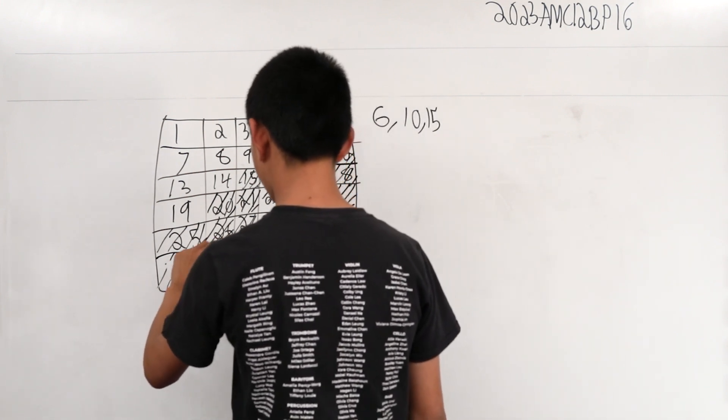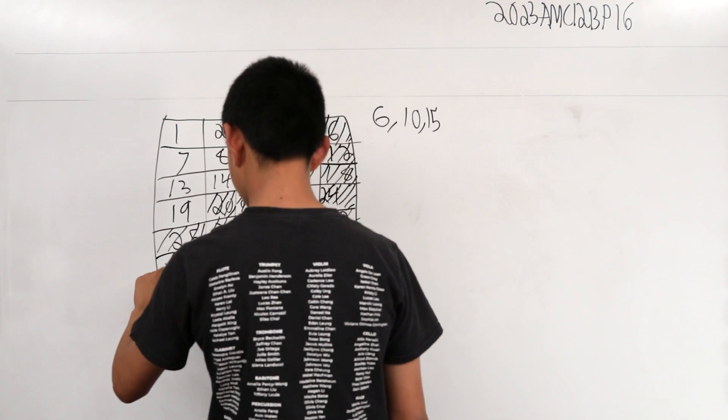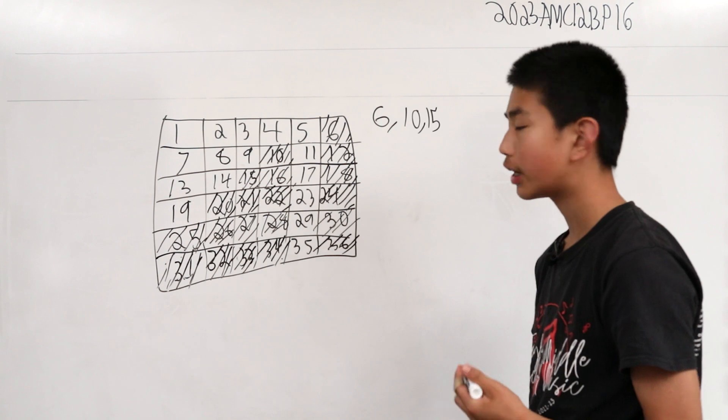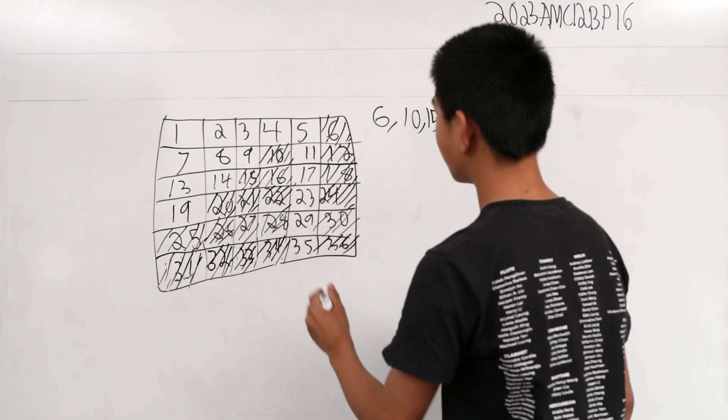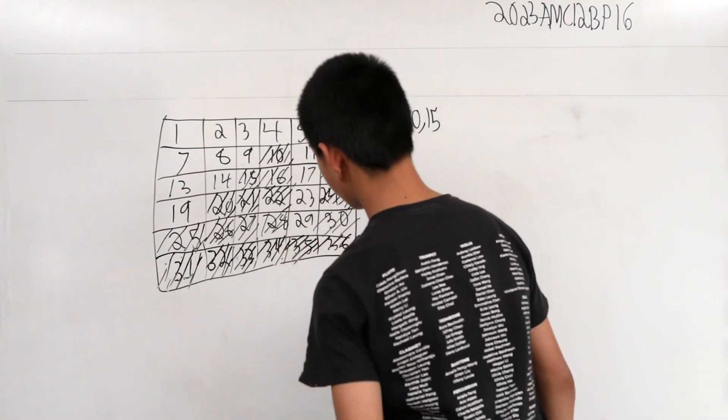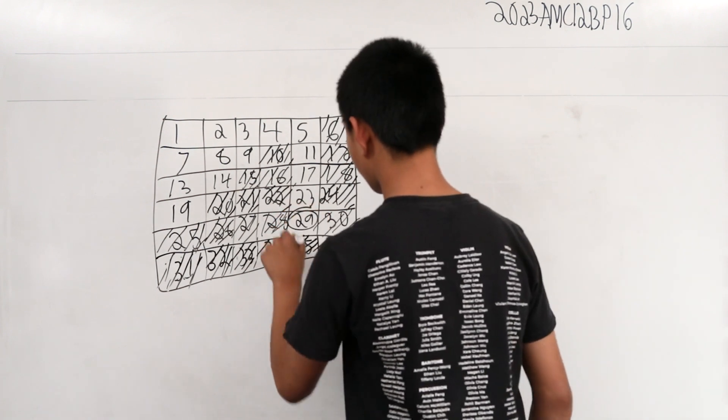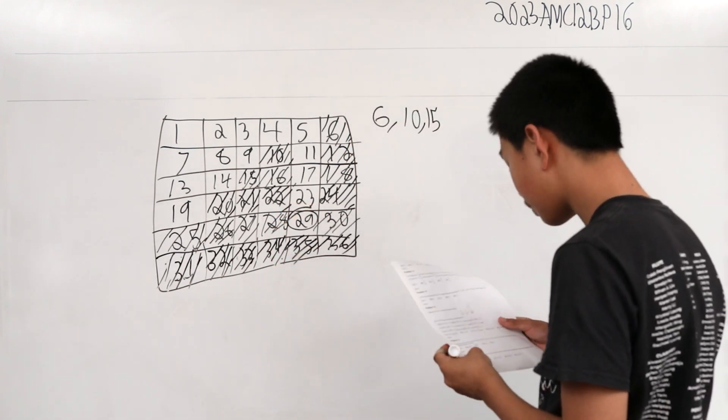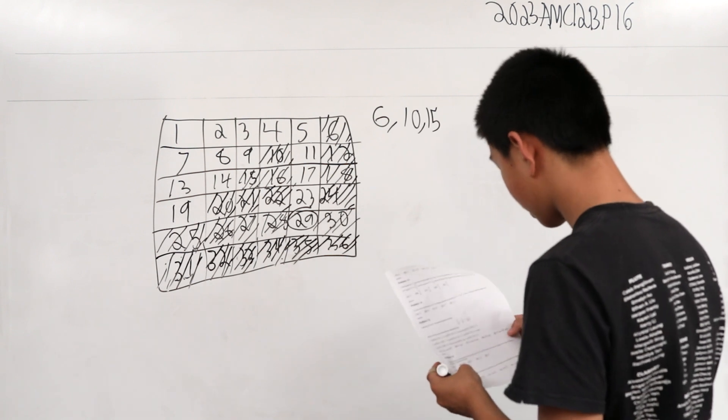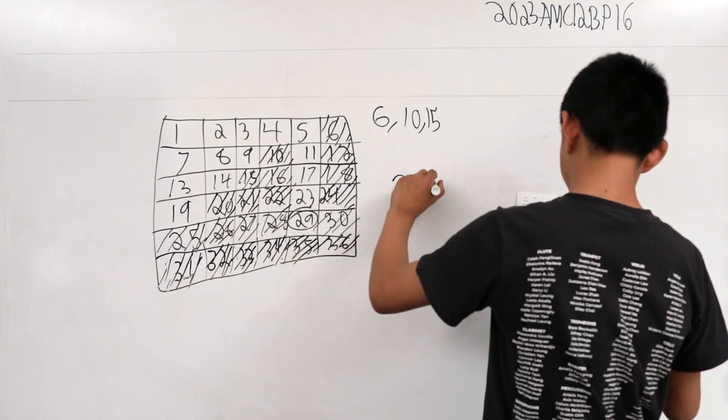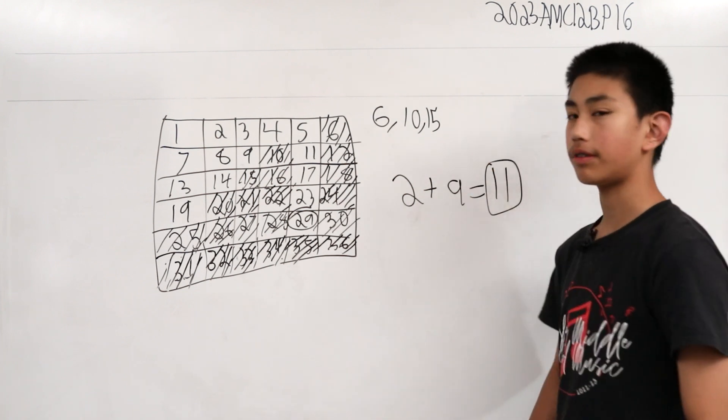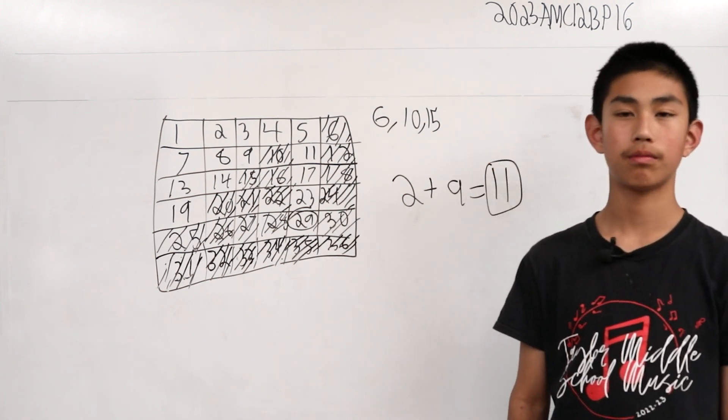The only problem is, we want to know how high this can go. It seems like we have reached our limit because 35 works. So 29 is our answer. But that's not our answer because we want the sum of the digits. So 2 plus 9 equals our answer of 11.